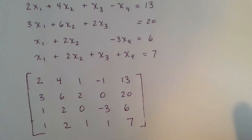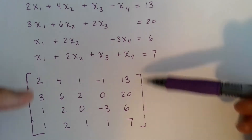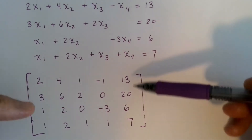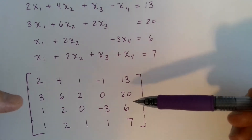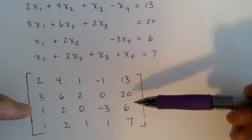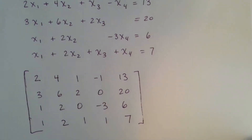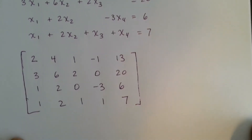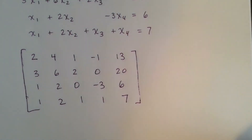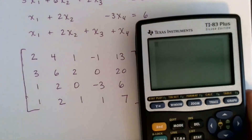We're doing the row operations of: interchanging or swapping any two rows, multiplying any row by a non-zero constant, or adding a multiple of one row to another. You want to use the calculator to do all these steps — it's very easy to make a simple mistake otherwise.